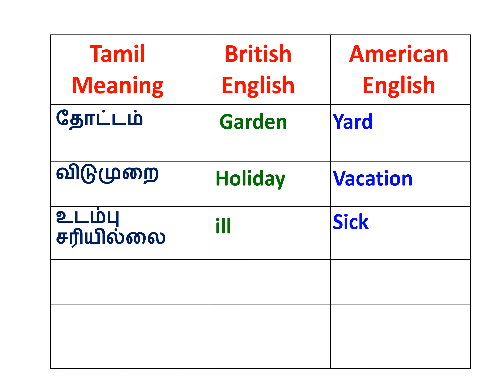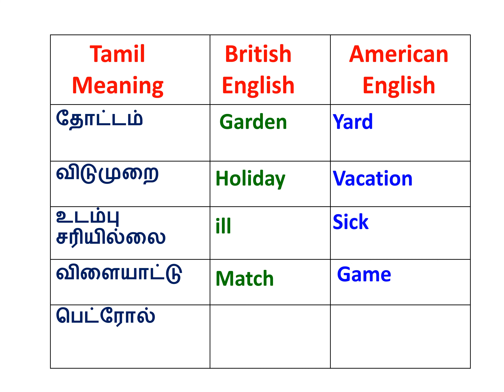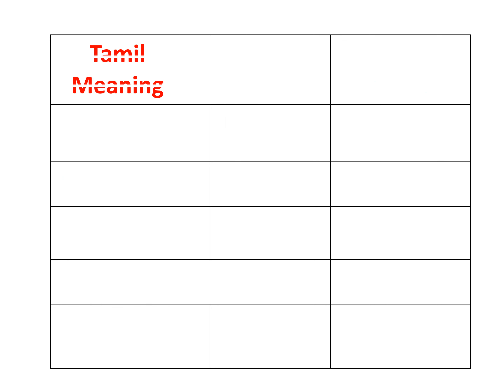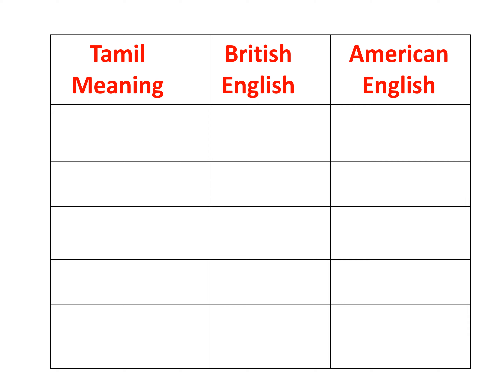Ill is British English and Sick is American English. Next word is Match — British English is Match. American English is Game. Next word is Petrol — British English is Petrol. American English is Gasoline. Next word is Taxi — British English is Taxi. American English is Cab.